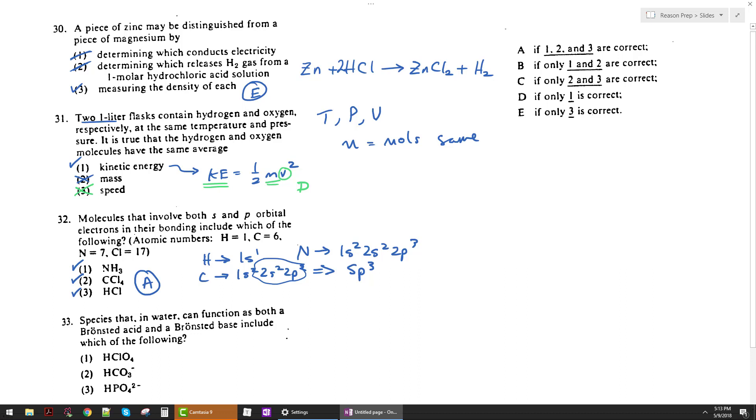And now 33. Which one functions as a Bronsted acid and a Bronsted base? Well, if it's a Bronsted acid, it's got to be able to donate a proton or an H+. It's got to be able to give one up. But if it's a Bronsted base, it's got to be able to accept one. So the problem with one is, yes, it can get rid of that H. But it can't really accept an H+, to become H2ClO4+. That's just not something that happens. You don't really gain. You don't really have acids become positively charged. That's strange. So you can get rid of one.